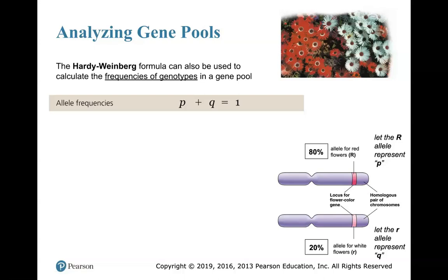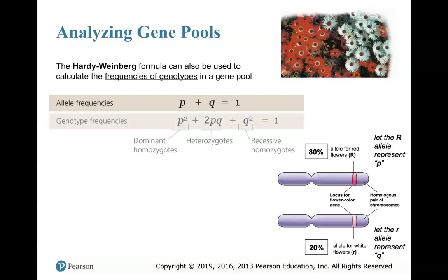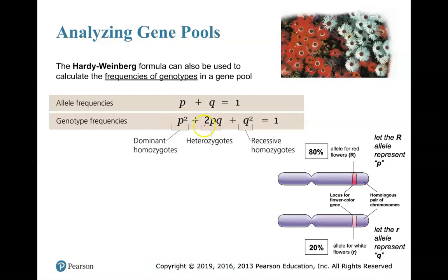How can we use Hardy-Weinberg to find the frequencies of genotypes in a gene pool? We can find allele frequencies through that individual letter, but what about genotypes — how many individuals are heterozygous, homozygous dominant, or homozygous recessive? We use a different Hardy-Weinberg formula for genotype frequencies: p-squared plus 2pq plus q-squared equals 1, and it always equals 1.